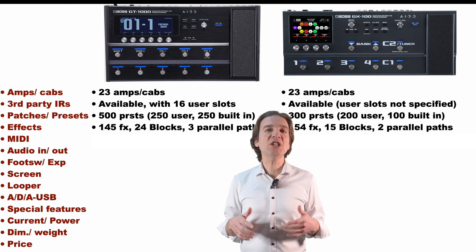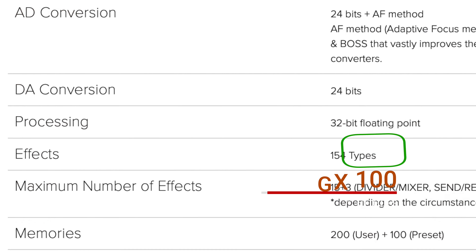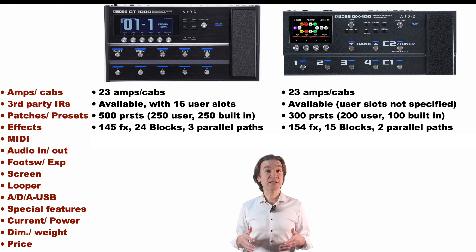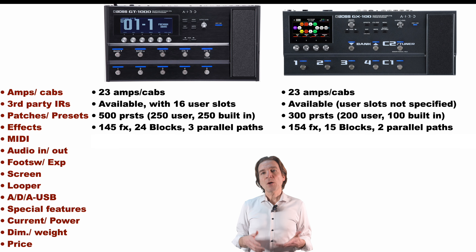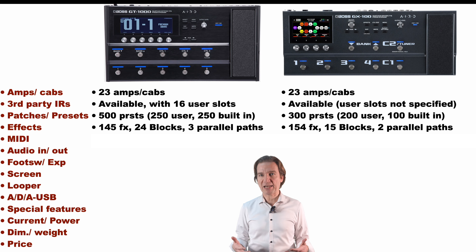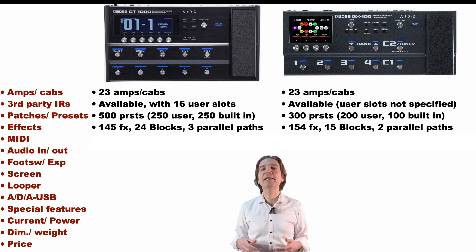As regards effects, the GX100 seems to have some more effects, even if it sounds strange to me, and maybe what is reported on the BOSS website is wrong. Furthermore, the GT1000 offers 24 effect blocks with 3 parallel paths, where the GX100 offers 15 blocks with 2 parallel paths. Therefore, the GT1000 is much more powerful in terms of effect chain management, but the 15 blocks of the GX100 are a lot — typically more blocks compared to what other amp-modeling pedalboards offer.